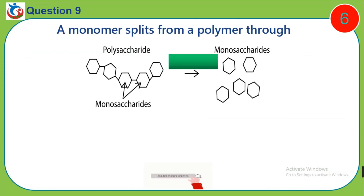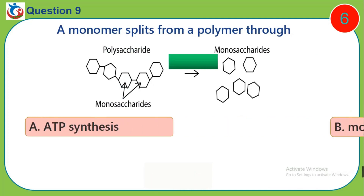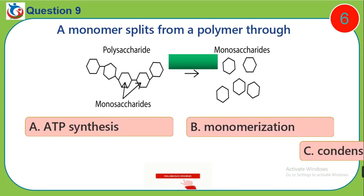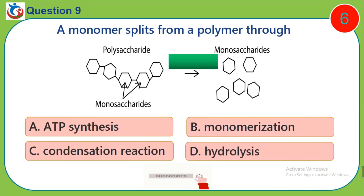Question 9. A monomer splits from a polymer through: A. ATP synthesis, B. Monomerization, C. Condensation reaction, D. Hydrolysis.